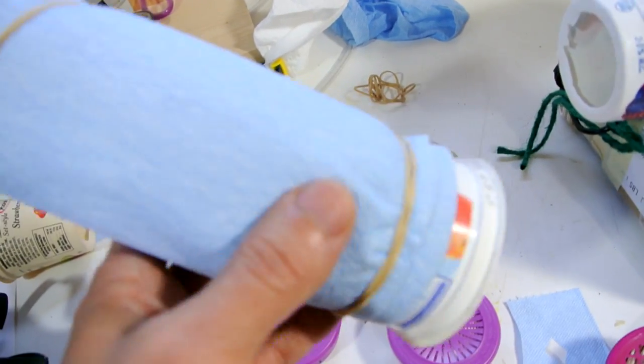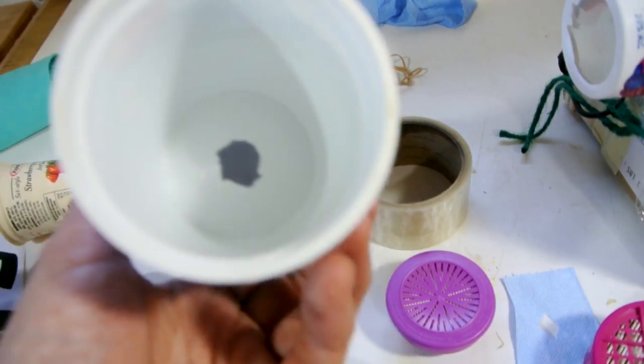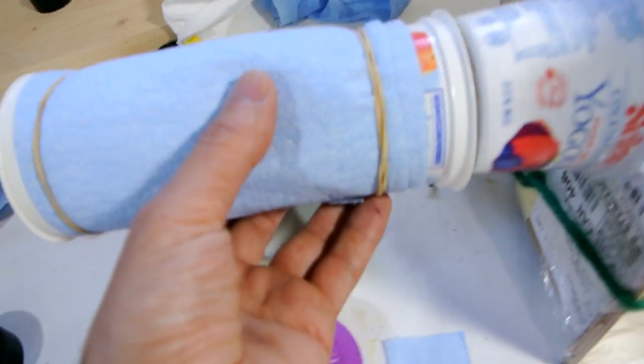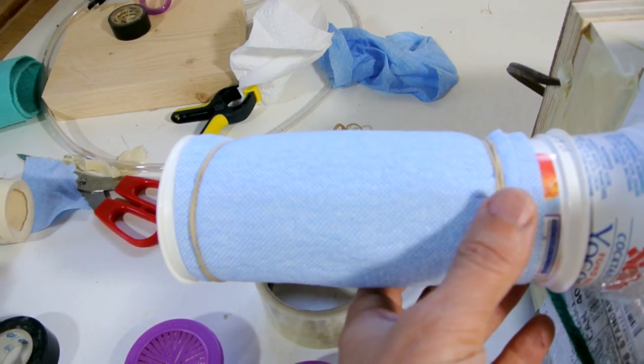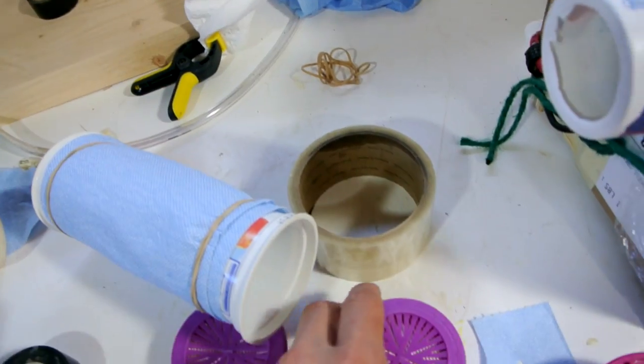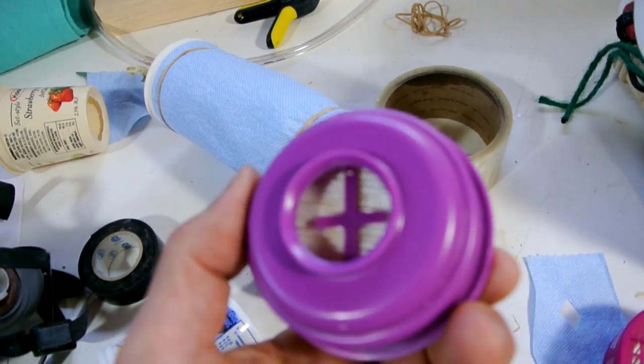Here's another experiment. This is a shop towel wrapped around 2 yogurt cups. And that fits on here. That in my tests performed about as well as these filters. But of course it's much bigger.